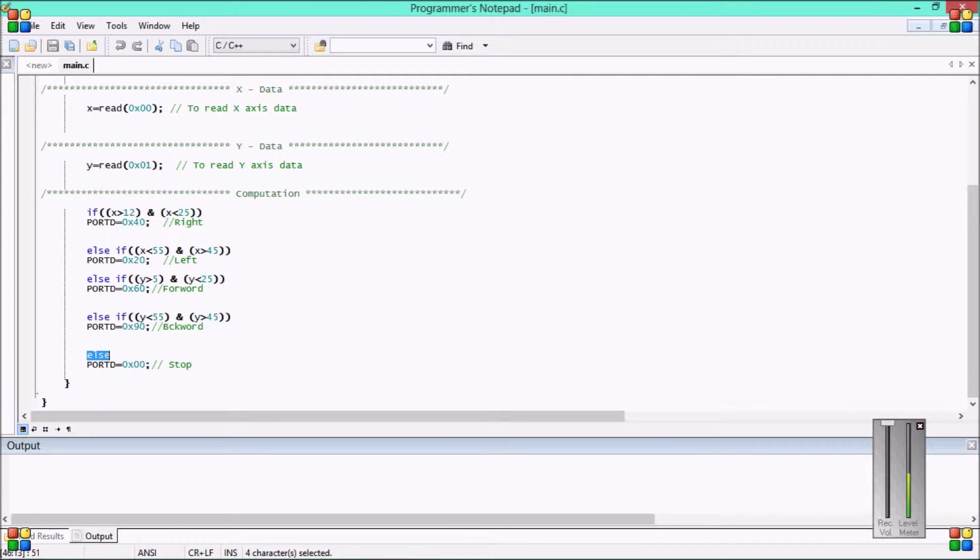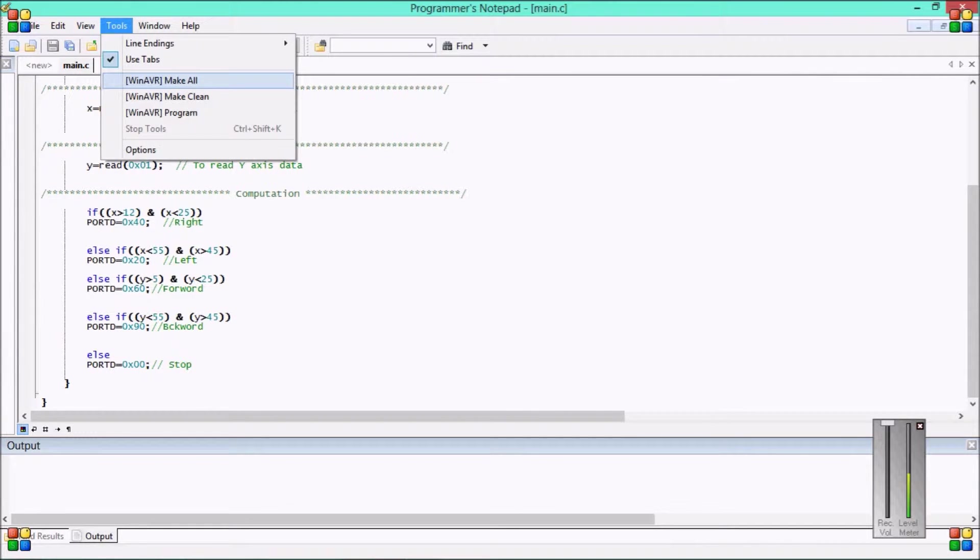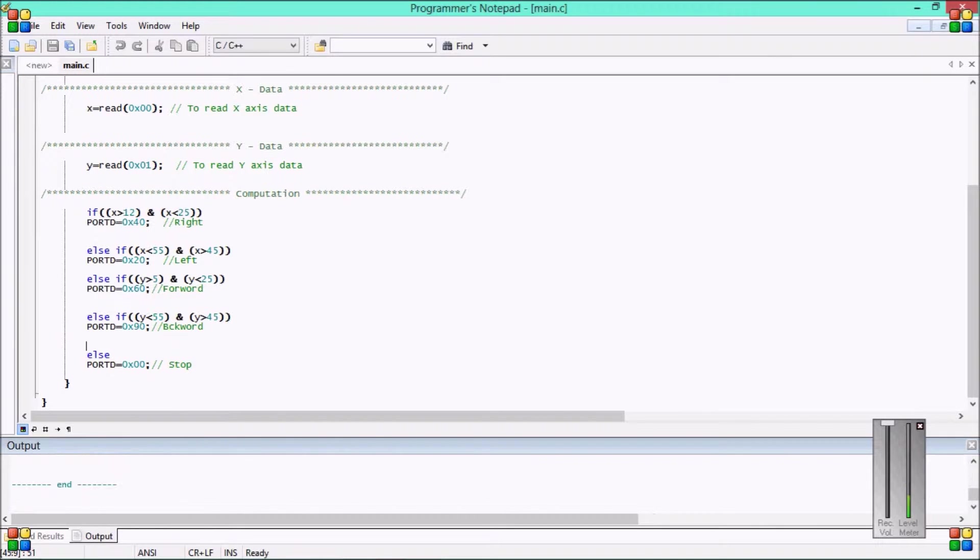Else, if no condition is satisfied by them means our sensor is at straight. It is not tilted in any direction. It is not tilted with respect to origin. That's why in that situation it should be at rest. Means PORTD equal to 0x00, at stop position. To check this, is our program correct or not? We will use tools, then make all. Yes. Here. Process exit code 0. Means there is no error. By this we create the hex file, which is used by HID boot flash software.